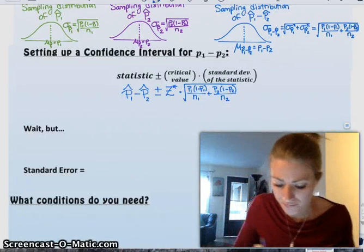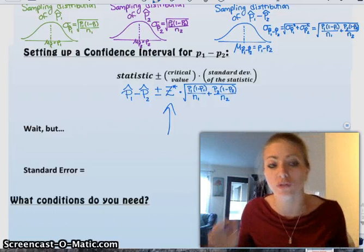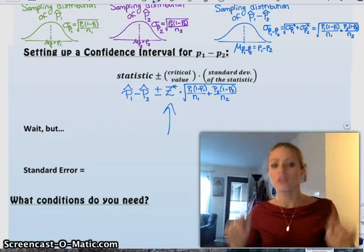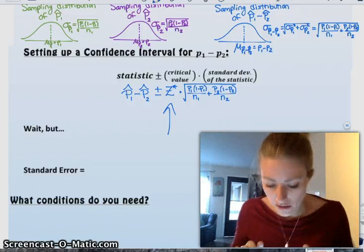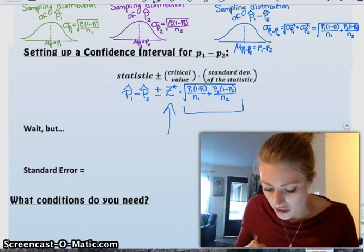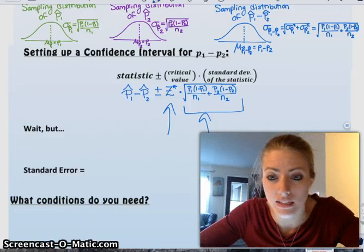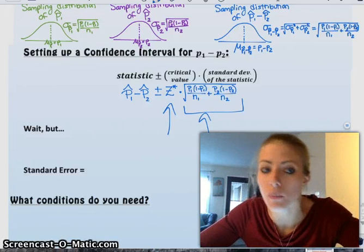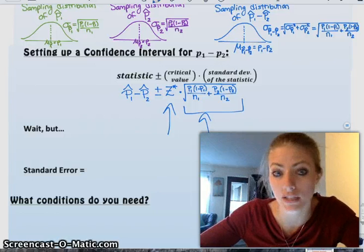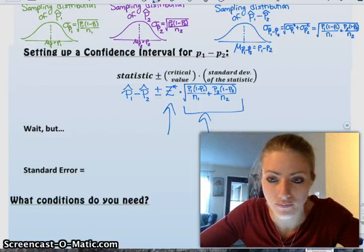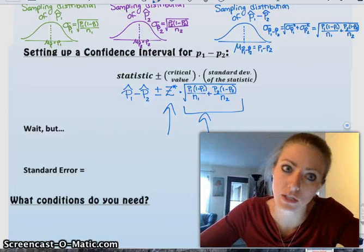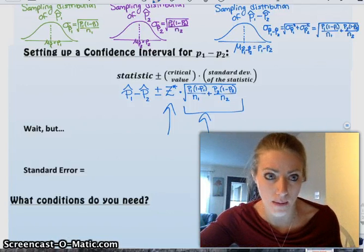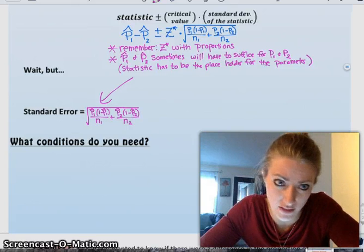Two things to note. One, it's z star because it's proportions. And we always use z with proportions. The only time we use t is when we're dealing with means and we don't know sigma. So z star, always, with proportions. And then our standard deviation, the thing to remember about that is that that is true if we have p1 and p2. We don't usually know what p1 and p2 are if we're making a confidence interval for them. Right? So sometimes we replace p1 and p2 with p hat 1 and p hat 2. And that's okay. Not a problem. So there you have it. Confidence intervals for differences in proportions.